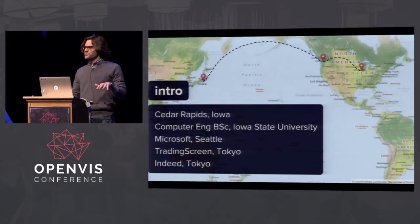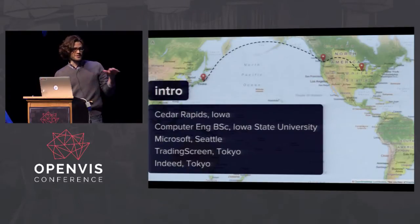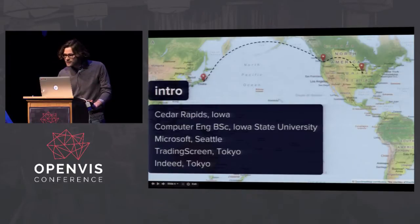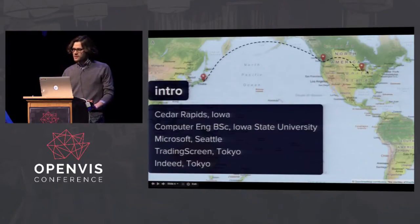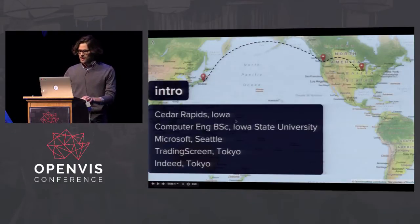I'm originally from Cedar Rapids, Iowa — a small spot near Chicago, about a five-hour drive away. I graduated from Iowa State University with my computer engineering degree. After school, I went to Microsoft in Seattle and worked on the Visual Basic .NET compiler team, where we helped release the first version of .NET.